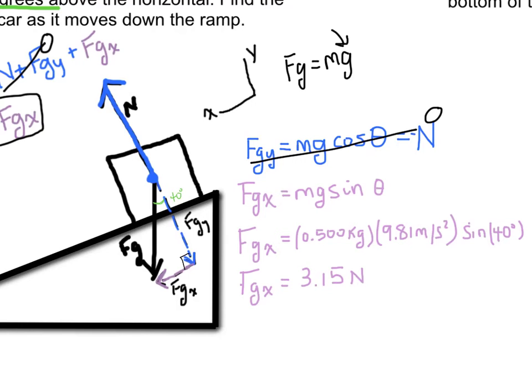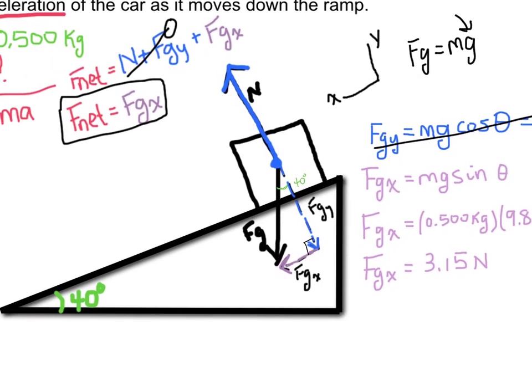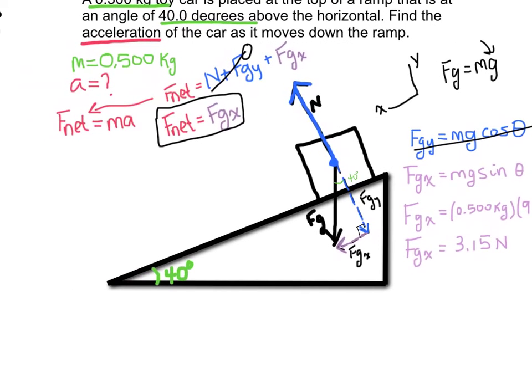Now I can find acceleration. Remember that acceleration is going to be found using this equation here. So I can rearrange this equation to solve for the acceleration. I also know that Fnet is the same thing as Fg in the x, which I just found.